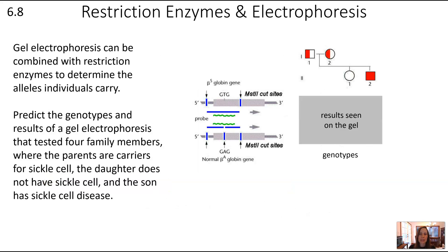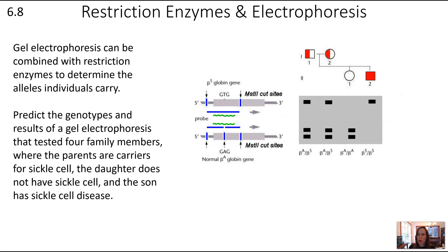We can combine gel electrophoresis with restriction enzymes to determine what alleles an individual carries. Let's go back to the hemoglobin example with the HbA and HbS alleles. Predict the genotypes and results of a gel electrophoresis that tested four family members: the parents are carriers for sickle cell, the daughter does not have sickle cell, and the son has sickle cell disease. The gray rectangle represents our gel — the top is where DNA is loaded and it travels downward.